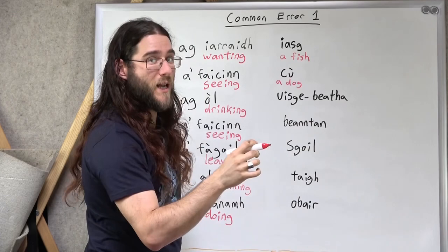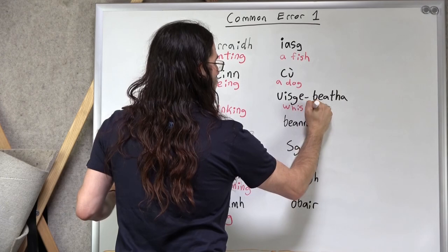Cù is a dog. Uisge-beatha, many learners know that one. Whiskey. Beanntan, those are mountains.